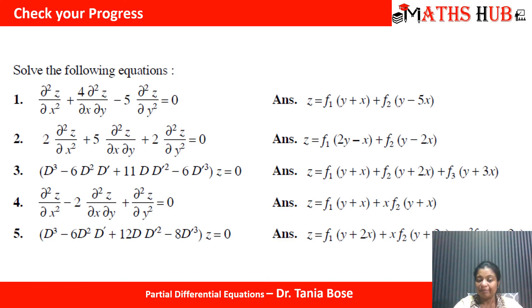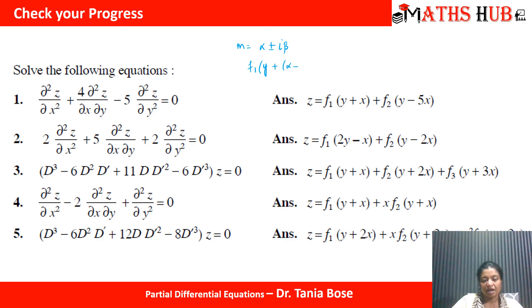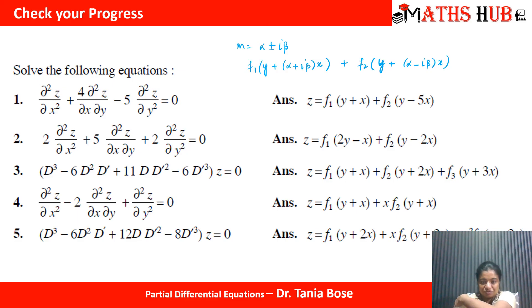If you encounter imaginary roots where m = α ± iβ, you simply replace m₁ and m₂ with the complex values. The solution is written as: f₁(y + (α + iβ)x) + f₂(y + (α − iβ)x).